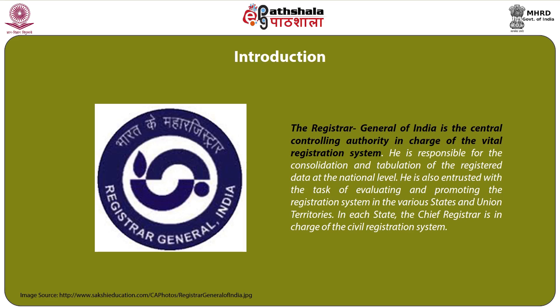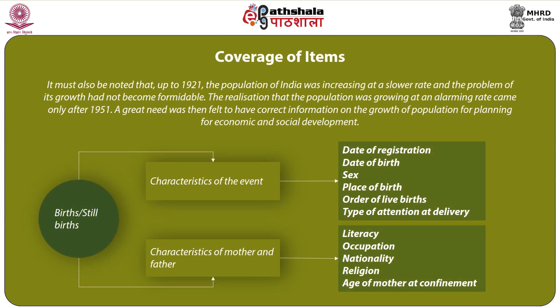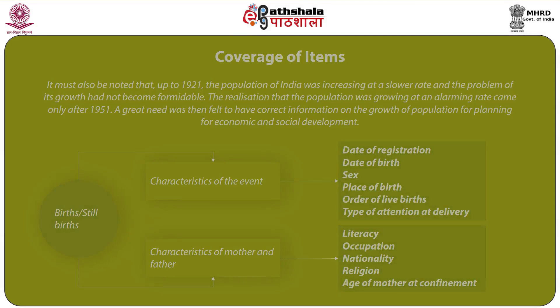In each state the Chief Registrar is in charge of the civil registration system. The items of information collected in the registration records for births and still births include characteristics of the event such as date of registration, date of birth, sex, place of birth, order of live birth, and type of attention at delivery. Also the characteristics of the mother and father like literacy level, occupation, status, nationality, religion, and age of mother at confinement are covered as part of the fertility data.